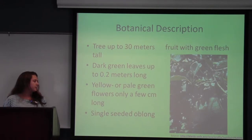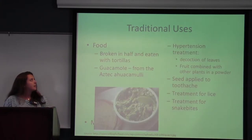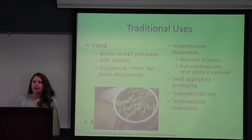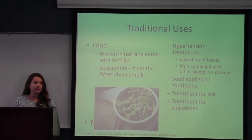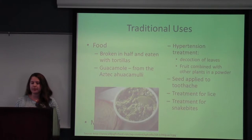When the female flowers are successfully pollinated through self-pollination or through insect pollination, they grow into single-seeded fruits with green flesh, as depicted there. The fruit has been consumed as food and cultivated for over 10,000 years, and there's evidence of cultivation dating back to 4000 BC found in excavations in Peru.